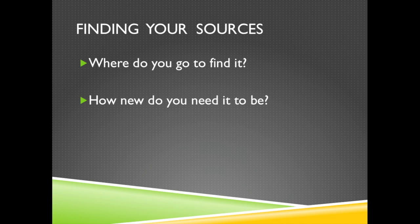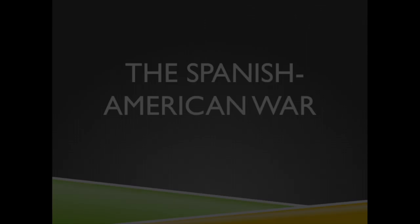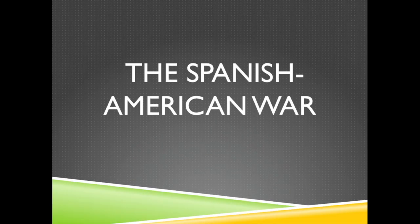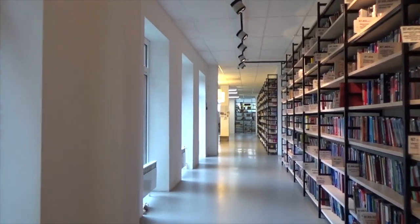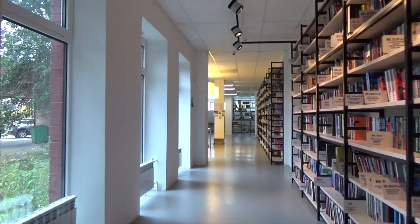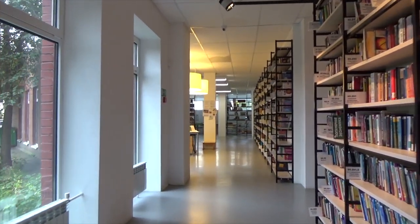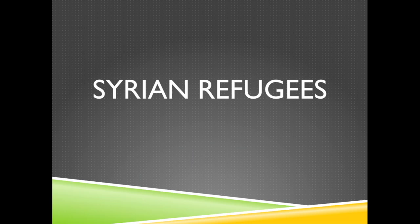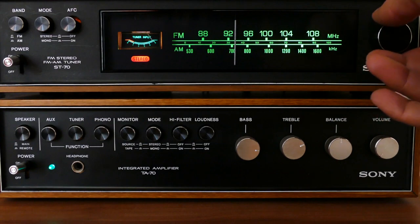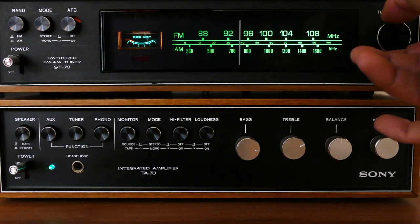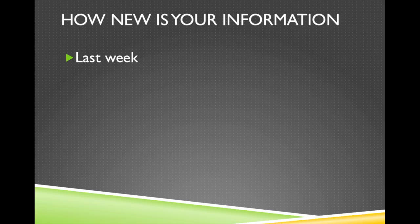Now that you've figured out what type of source you want to use, it's time to think about where you're going to find it. Think about the topic of your paper and how new you need your information to be. If you're writing a paper about the causes of the Spanish-American War, your sources can be a little bit older — it's okay to use books that are 20 years old because information isn't changing too rapidly. But if you're writing a paper about the Syrian refugee situation, the information you use should be a lot newer because things are changing on that topic every single day. For things that happened last week, you're going to want to look at a newspaper or another popular source.